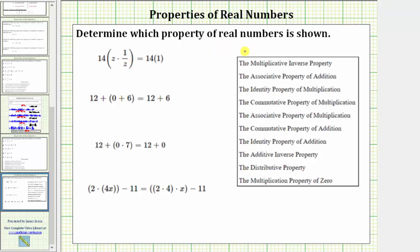We are asked to determine which property of real numbers is shown. Notice on the right we have a list of properties. On the left, we need to indicate which property is shown. In this video, we won't go through each of these properties in detail, but I will put them up on the screen, so if you need to, you can pause the video for review.